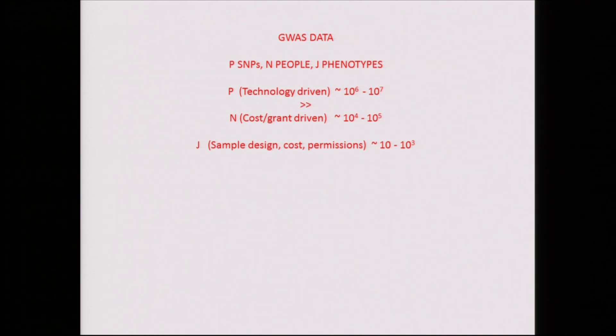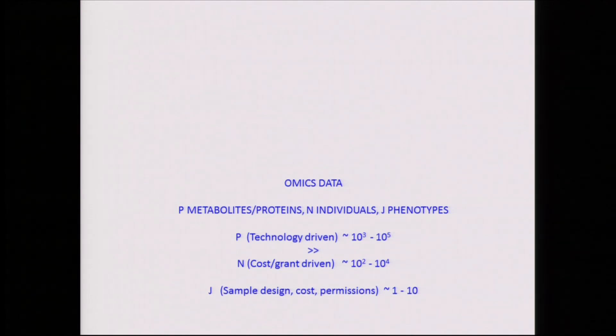The number of phenotypes you can get information on is again driven by factors that are not strictly scientific. Another possibility is to collect data on omics — the metabolome, proteomics, that kind of thing — with similar constraints of technology and money. I'm going to give you one example of a study in which we used an omics approach to look at fruit flies.